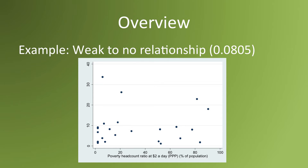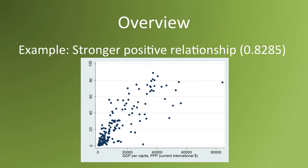This is an example of a pairwise correlation that's weak — it's close to zero. It shows the relationship between poverty and the murder rate. As the graph suggests, countries with high murder rates can have a lot of poverty or not much, and countries with low murder rates can have a lot of poverty or not much.